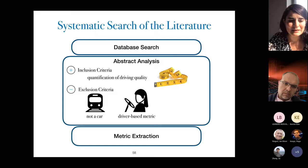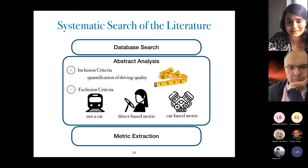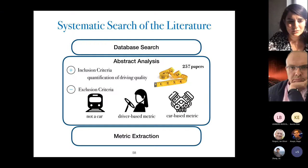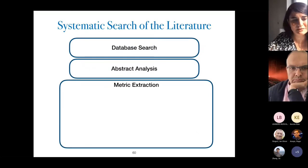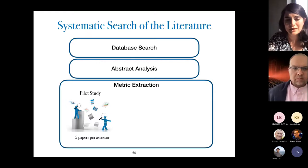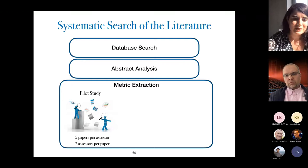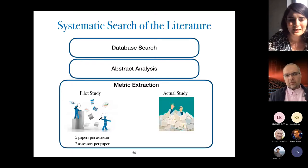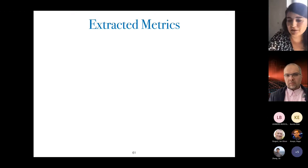We also excluded papers related to parts of the car such as wheel mechanics. After this manual process we had 257 papers. At that point we needed to go into the papers and extract the metrics used. We conducted a pilot study with three assessors, each assigned five papers with two assessors per paper, to ensure consistent task understanding. Then in the main study, each assessor had 83 papers from which they extracted the list of metrics. The resulting metrics were grouped into six categories: lateral position, speed, steering, headway position, braking, and traffic signs.